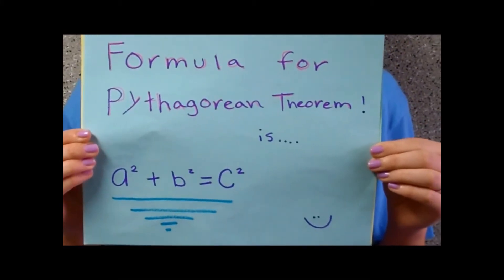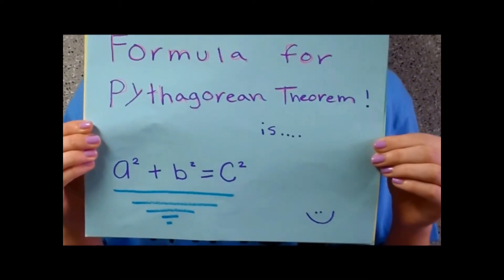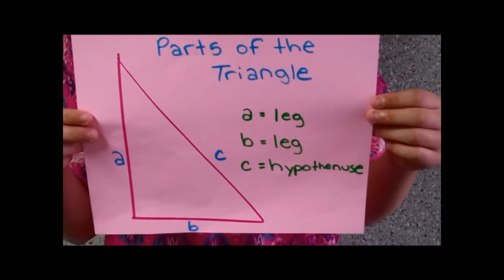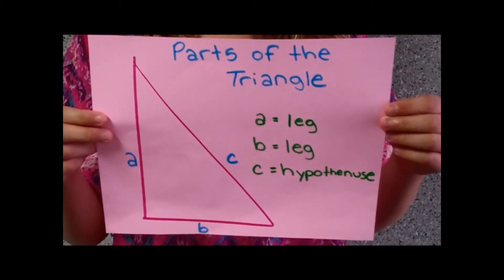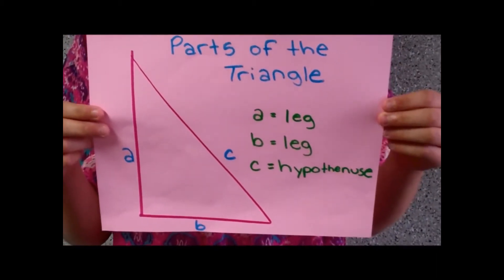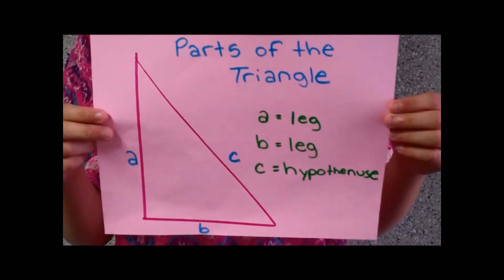The formula for the Pythagorean theorem is A squared plus B squared equals C squared. The parts of the triangle are A, B, and C. A and B are both legs, and C is the hypotenuse.